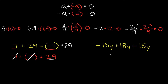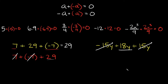It works the same way with variables. Here we have negative 15y plus 18y plus 15y. Right off the bat you should see the answer is simply 18y, because the negative 15y and the positive 15y cancel out and go to 0. That's the inverse property of addition — now let's move on to multiplication.